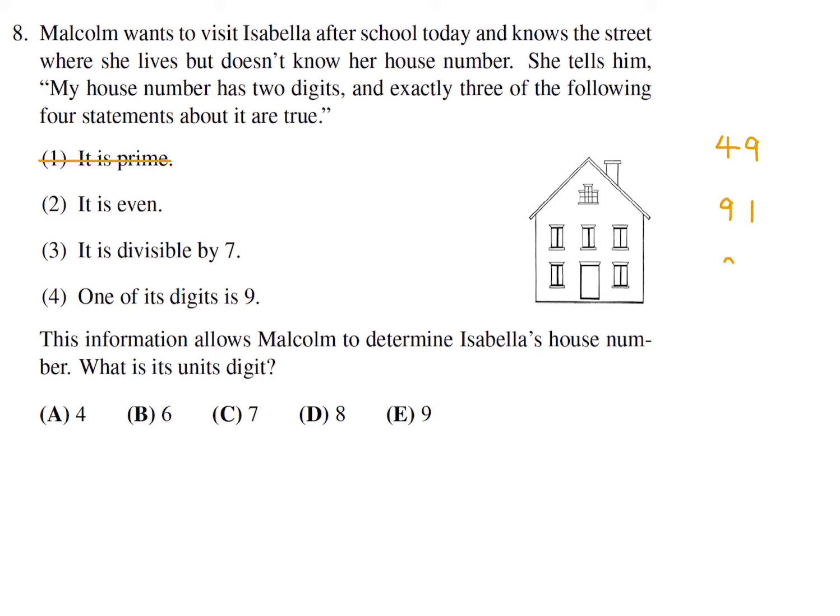91, and 98. These are multiples of 7. So they satisfy that criteria. They have a 9 in them. Now, which one of these satisfies this criteria even? Just this one. So 98 is the only one that satisfies these three criteria.